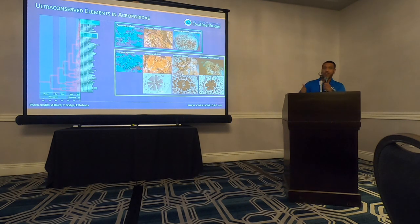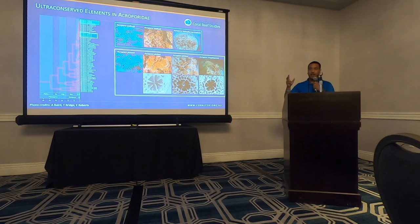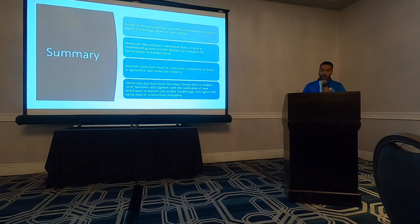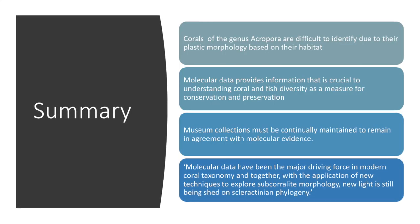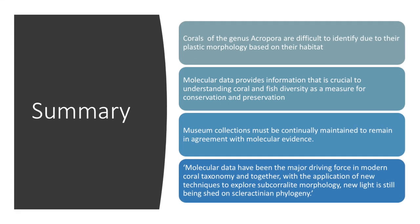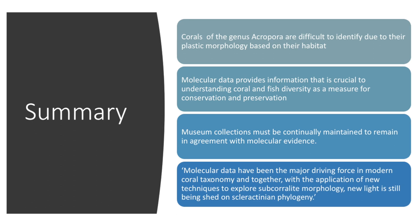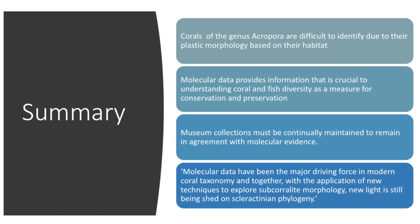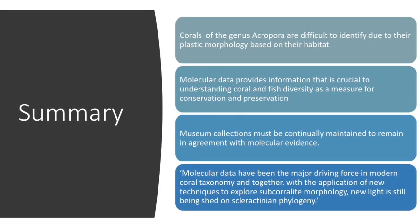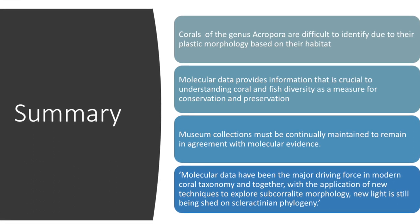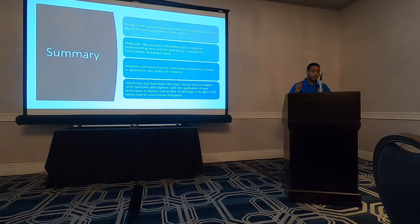Also, if we're looking at physical characteristics they can be subjective — three different collectors might classify the same corals differently based on their experience. Using DNA we're able to confirm many of these relationships. In summary, corals of the genus Acropora are really difficult to identify because of their plastic morphology based on their habitat. Molecular data such as DNA sequencing provides information important to understanding coral and fish diversity as a measure of conservation and preservation for the Great Barrier Reef. Museum collections have to be updated constantly to keep up with the molecular evidence.